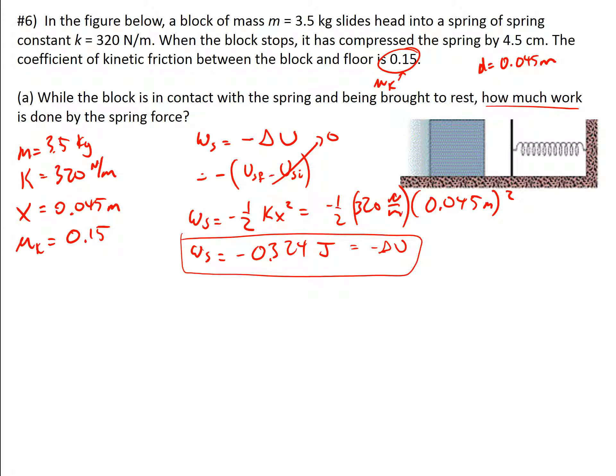So this is the work done. This negative value is saying that there is actually work being taken out of the energy that the block has — it's being converted into energy stored in the spring.